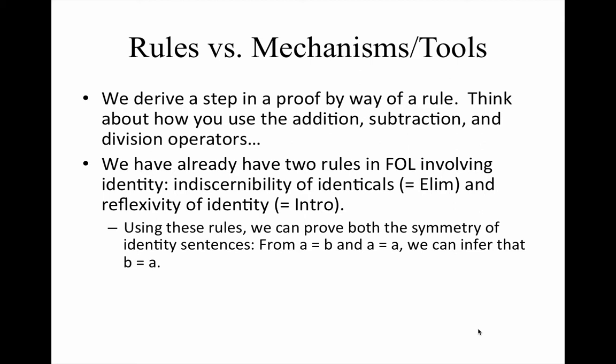So for example, we can say that when A is identical to B and A is identical to A, it follows that B is identical to A. We'll rarely use the intro rule for the identity symbol.